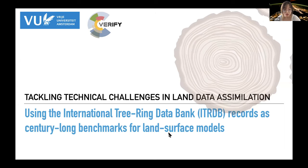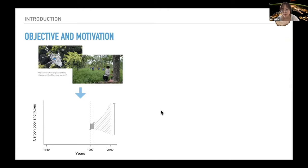I'm glad to have an opportunity to share my challenges during research using the International Tree Ring Data Bank, which records ITRDB, a century-long benchmark for land surface models. Land surface models are mostly constrained by short-term benchmarks, like a few tens of years long, which means current models lack long-term benchmarks for forest ecosystem functioning. This causes uncertainties in simulated future global carbon cycles and climate projection.